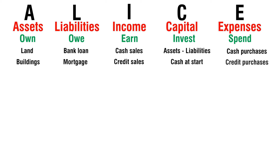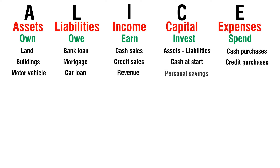Credit purchases — spend. Motor vehicle — own. Car loan — owe. Revenue — earn. Personal savings — invest. Discount allowed — spend. Furniture — own. Hire purchase — owe.